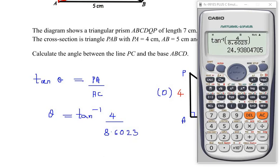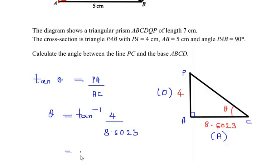We get the value here as 24.938, or rounding it to just one decimal place we'll get it as 24.9. So here I'm going to take just one decimal place, so it is 24.9 degrees.